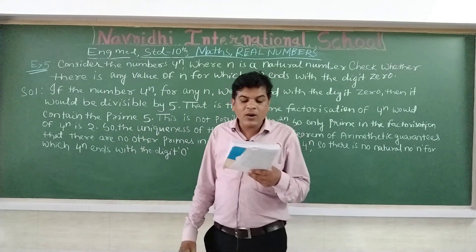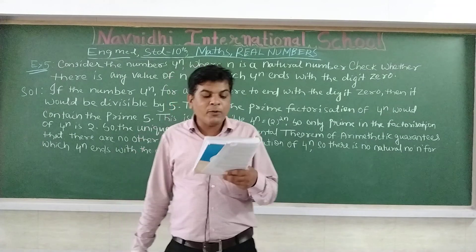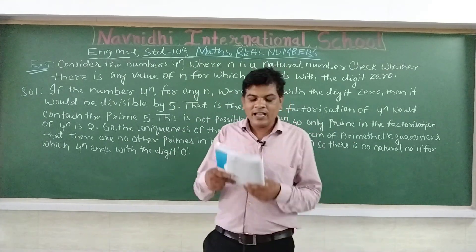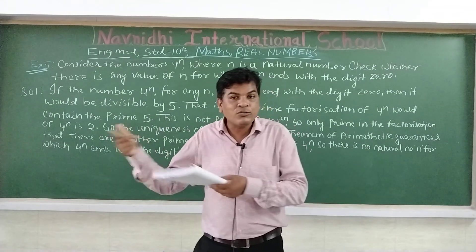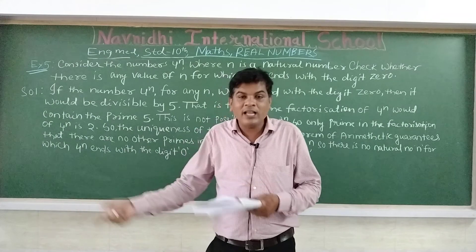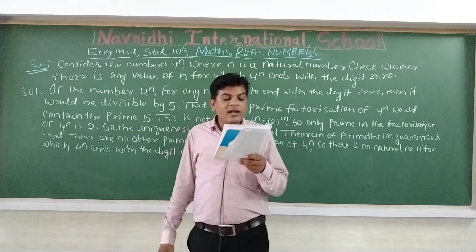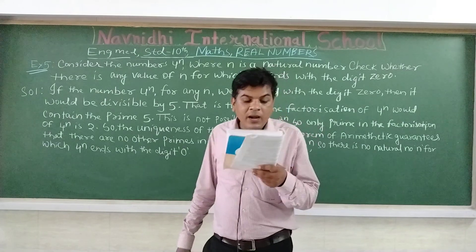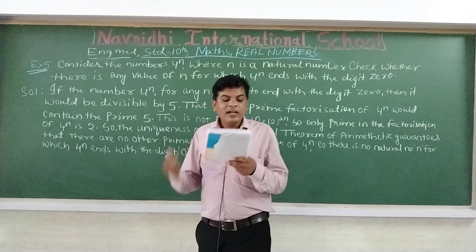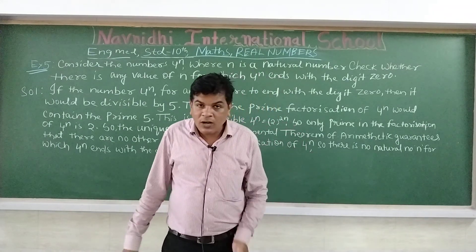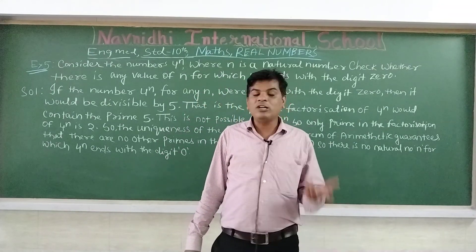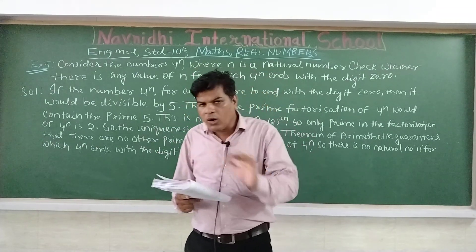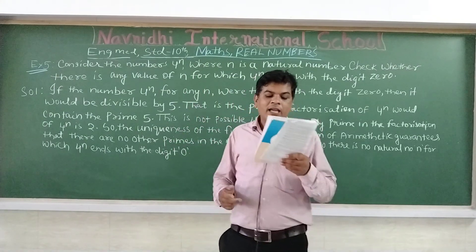In your earlier classes you have seen that any natural number can be written as a product of prime factors. For instance, 2 is equal to 2, 4 is equal to 2 into 2, and 69 is equal to 3 into 3, and so on. A prime number is a number which has only 2 factors. For example, 2, 3, 7, 11, 23 — these are all prime numbers because each has only 2 factors.